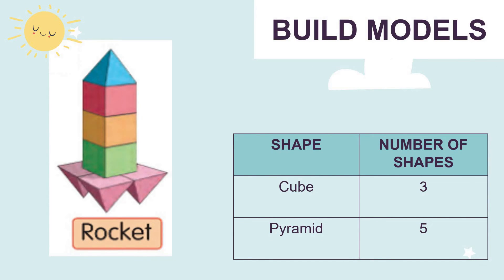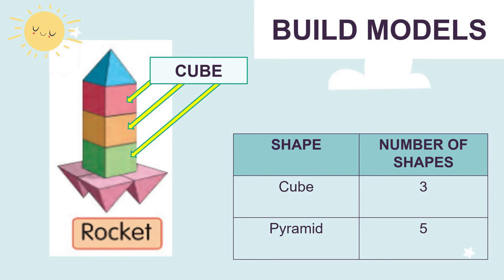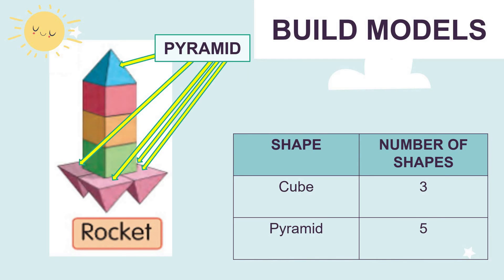Now look at this model — this is a rocket. Let's name the 3D shapes. There are 3 cubes and 5 pyramids; 1 pyramid is hidden at the back.